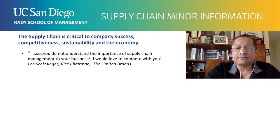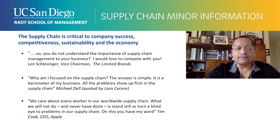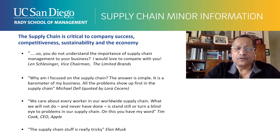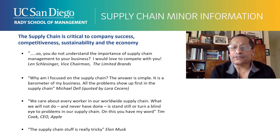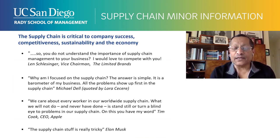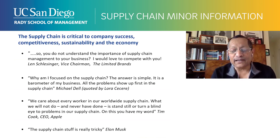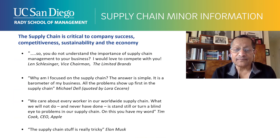Supply chain is critical to a company's success, competitiveness, and the economy. Len Schlesinger of Limited Brands said: 'If you don't understand the importance of supply chain management to your business, I would love to compete with you.' Michael Dell said: 'Dell is a supply chain company — the supply chain is a barometer of my business.' Tim Cook talks about the worldwide supply chain all the time. And Elon Musk says: 'This supply chain stuff is really tricky.' So it's complex, it's the answer to competitiveness, it's powerful, and it's tricky.